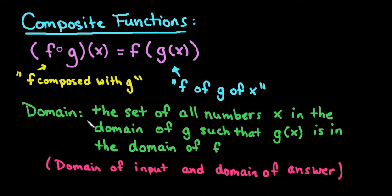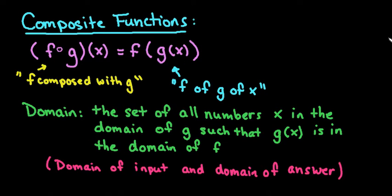The domain is the set of all numbers x in the domain of g such that g(x) is in the domain of f. Basically, you need the domain of the input — whatever your g(x) is — and the domain of the answer. That combined gives you the domain of your composite function. I will address that as well.